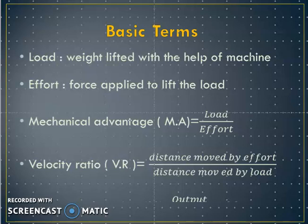The first basic concept is load. The weight to be lifted or moved, or the resistance to be overcome with the help of a machine, is called the load. It is generally denoted by the capital letter W and its unit is Newton. The second basic concept is effort: the force applied to lift or move the load or to overcome the resistance through a machine, generally denoted by capital letter P, with unit Newton.